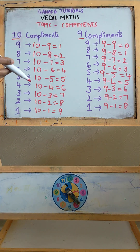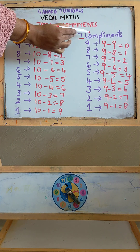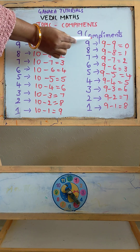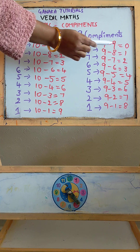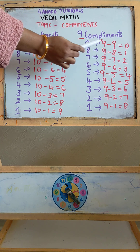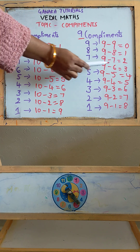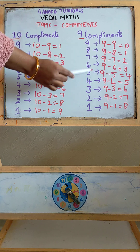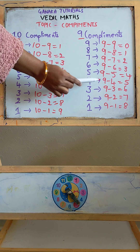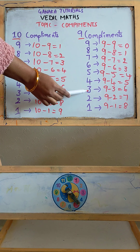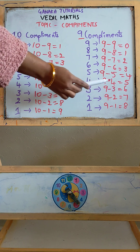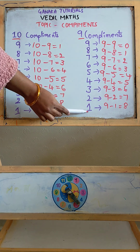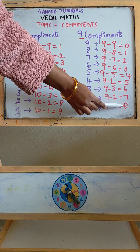So for base 9: complement for 9 is 0, for 8 it is 1, for 7 it is 2, for 6 it is 3, for 5 it is 4, for 4 it is 5, for 3 it is 6, for 2 it is 7, and for 1 it is 8.